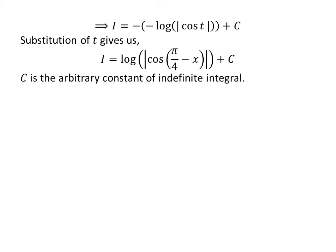Substituting t back in terms of x, since we assumed t is equal to pi upon 4 minus x, and minus of minus is plus, i is equal to natural log of the absolute value of cosine of pi upon 4 minus x, plus capital C.